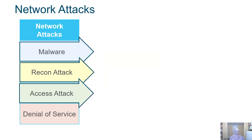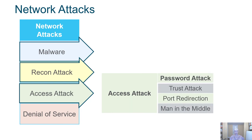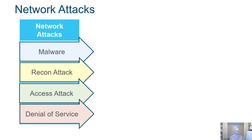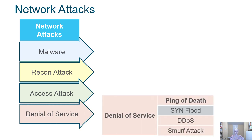An access attack is when the threat actor attempts to attack your passwords, violates trust, and gains access to areas they shouldn't. This includes port redirection and man-in-the-middle attacks. A denial of service disrupts service — it could bring your whole network down and prevent authorized users from getting in. That includes ping of death, SYN floods, DDoS attacks, and smurf attacks.